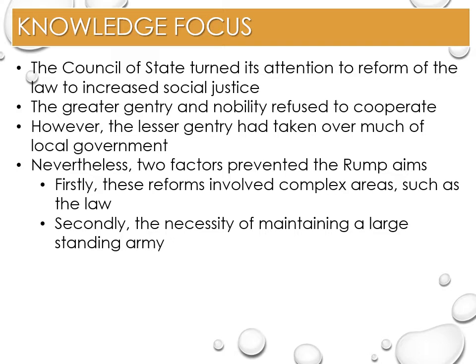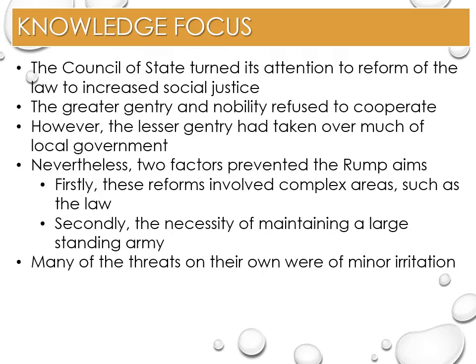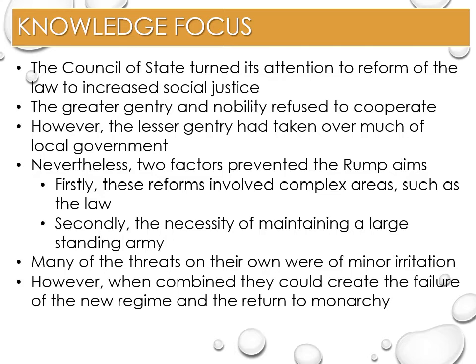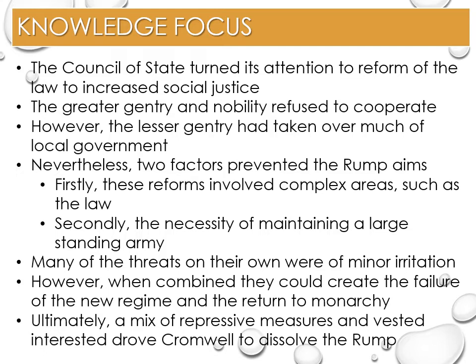Secondly, the necessity of maintaining a large standing army was the cause of such high taxation. The paradox that now existed was to plague the Rump: without support from the political nation, the army was required, but as long as the army existed, support from the political nation was not forthcoming. To raise funds, the Rump from April 1649 began to sell crown lands. However, the wars in Ireland, Scotland, and against the Dutch led to a shortfall in revenue of £700,000 in 1653. Many of the threats on their own were of minor irritation, however when combined, they could create the failure of the new regime and the return to monarchy.